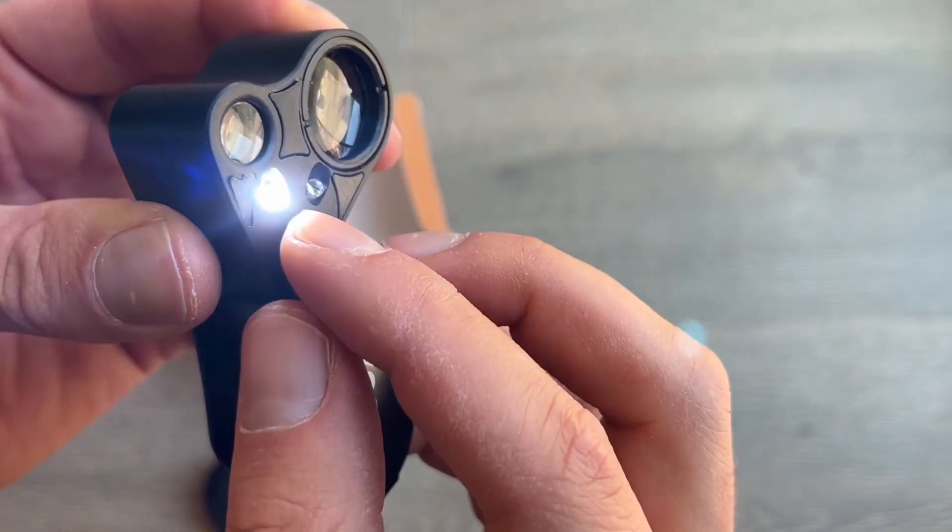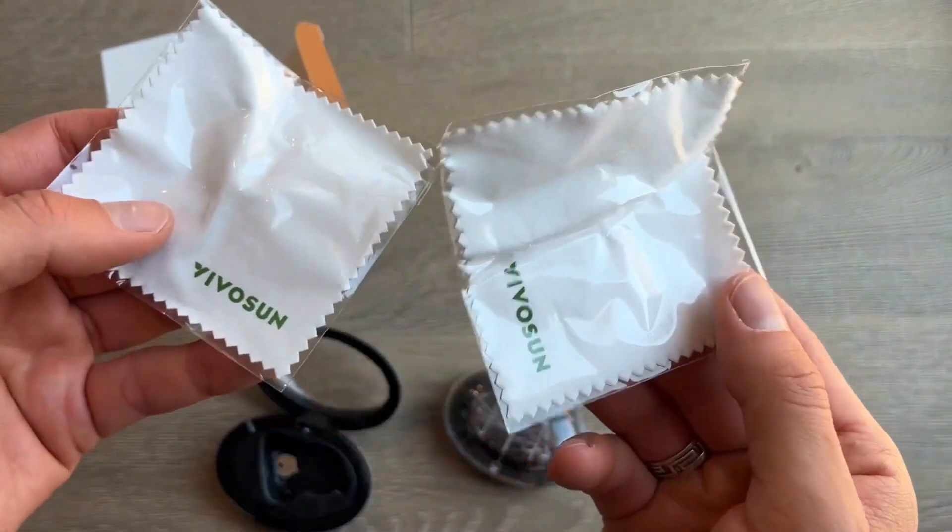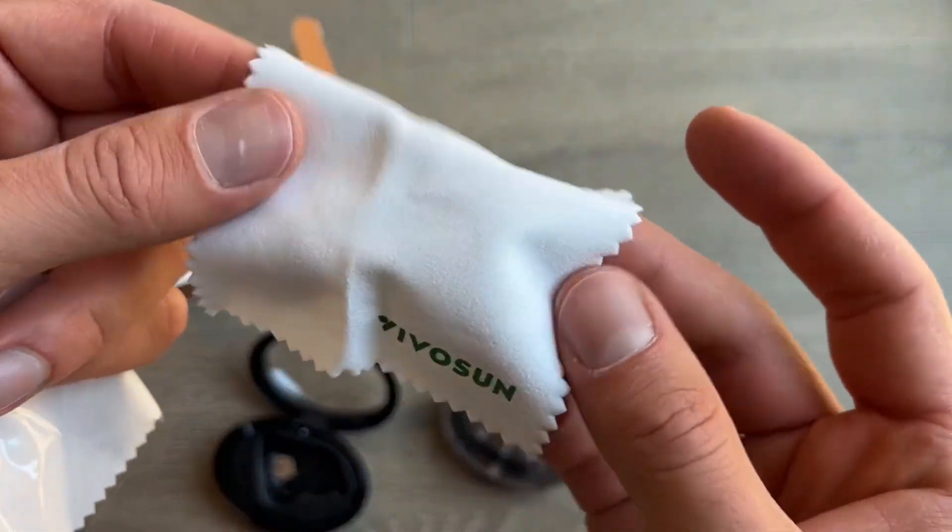These do not charge. I believe they have little tiny batteries inside that are included and you can see the little switch on the center is the off button and then on the right or left is going to be the corresponding magnification level that you want.